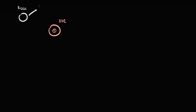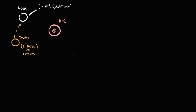Humoral immune defense in our organism is provided by plasma B cells. The function of B cells is to produce antibodies against antigens, and the function of B cells is regulated by T-helpers. T-helpers essentially tell B cells which cells are friends and which cells are enemies. In normal conditions, T-helpers recognize red blood cells as friends.